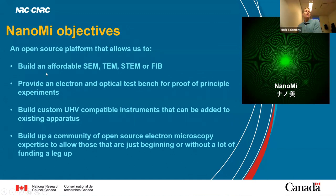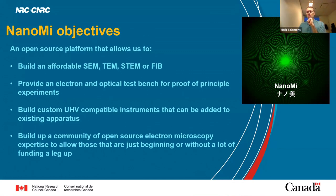Our objectives with the NanoME are to enable people to build an affordable scanning electron microscope, transmission electron microscope, scanning transmission electron microscope, or FIB. We use electrostatic lenses, which can be used on ions as well as electrons, so that's how we can do focused ion beam. It also provides an electron and optical test bench where you can do proof-of-principle experiments — we're going to use it to try to entangle electrons and photons, and you can do some unique quantum experiments.